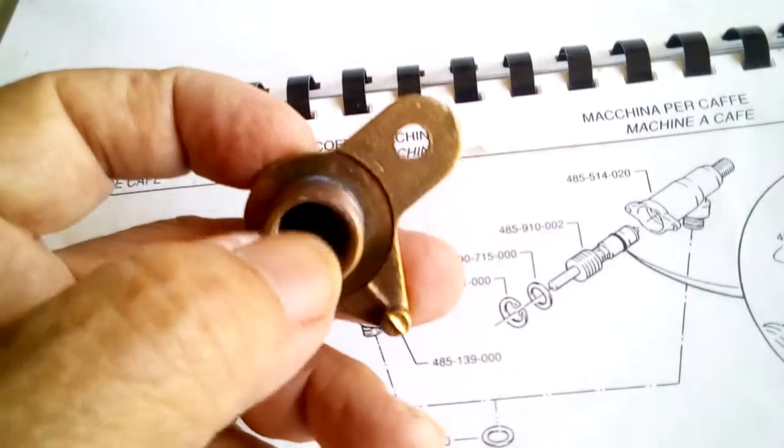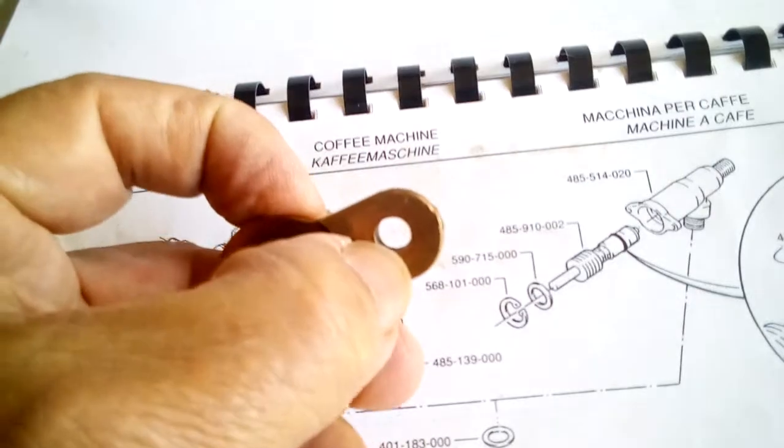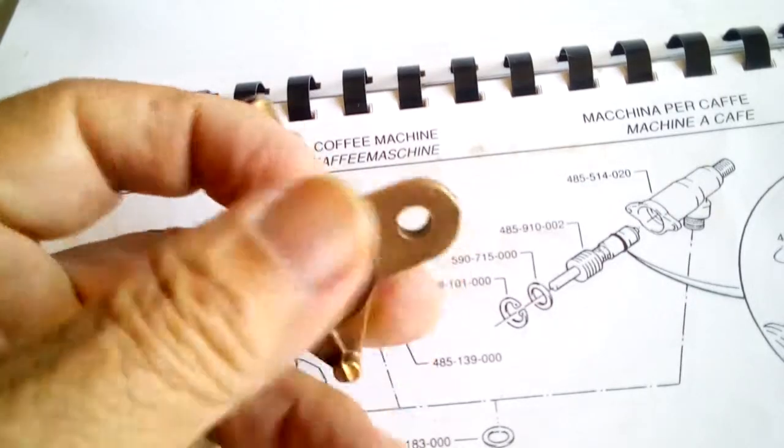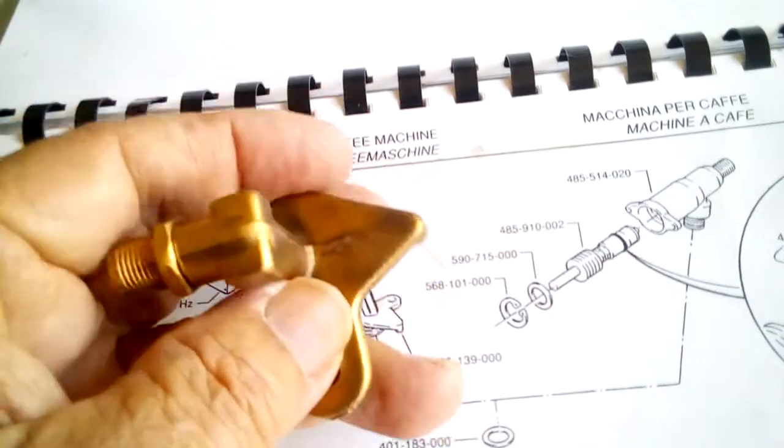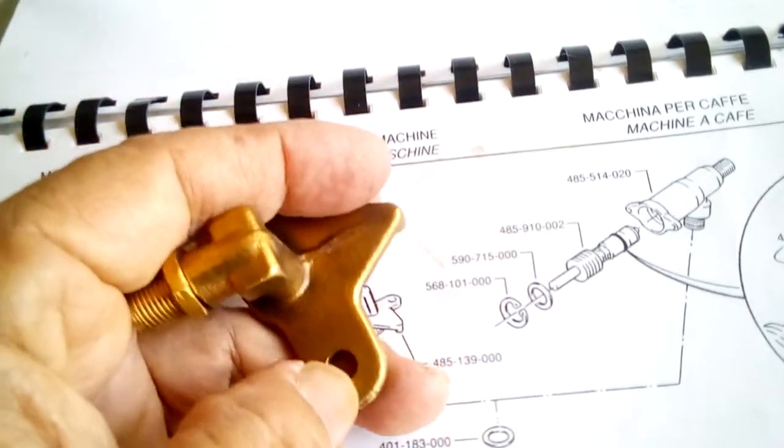And then the mounting screw hole would be here which is a clip. It's usually a clip and then you can use a Phillips head screw to hold this down.